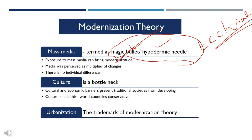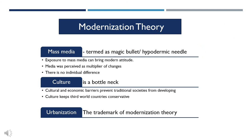Modernization theorists also argued that there are a number of cultural and economic barriers that prevent traditional societies from developing. Culture acts as a bottleneck and makes third world countries more conservative. According to this theory, cultural and information-based development is required, and urbanization was termed as a trademark of this modernization.